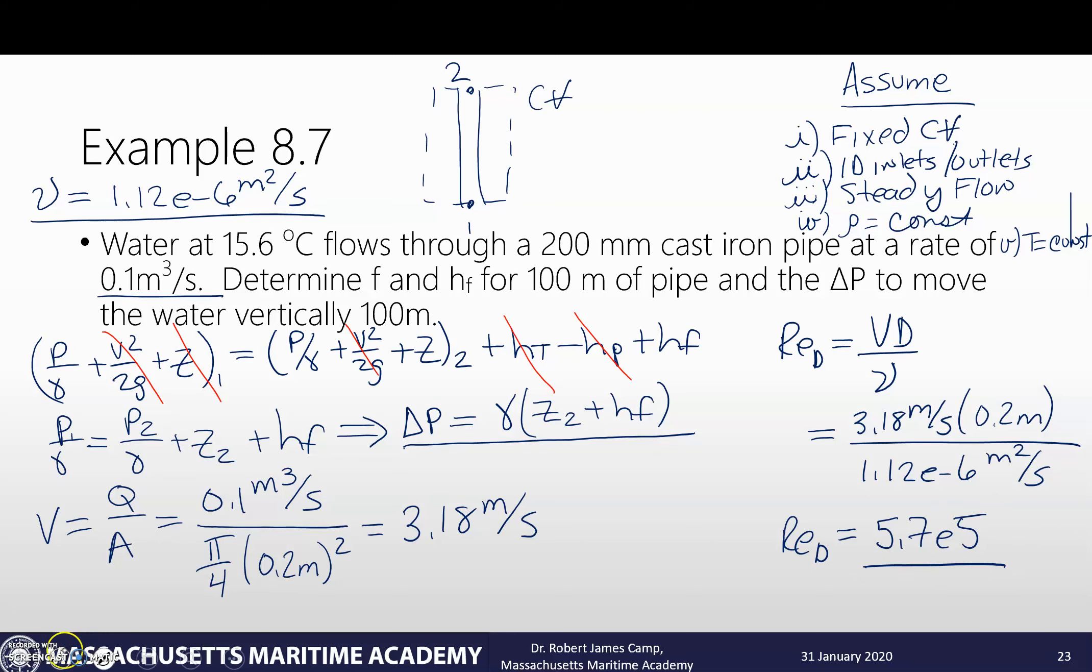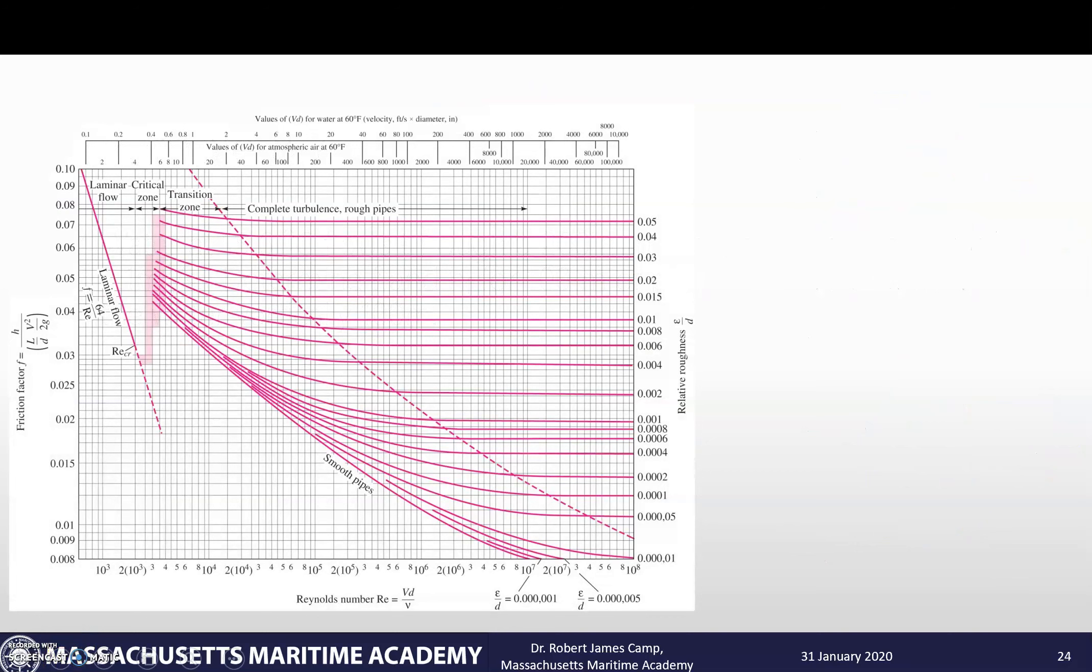So we're going to go to our Moody chart because we can use the Moody chart to calculate this out. So Reynolds number based on diameter of 5.7 e to the 5. I need my epsilon. So I go to my book. What is the epsilon of cast iron? It's 0.26 millimeter. Special note, this is not the English system where it has it in feet. Epsilon is actually a millimeter. So we have to pay attention to that. We need a dimensionless number. So 0.26 millimeters divided by our 200 millimeter pipe gives us an epsilon over d of 0.0013.